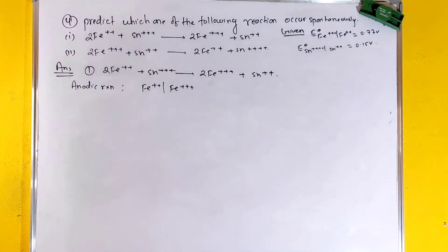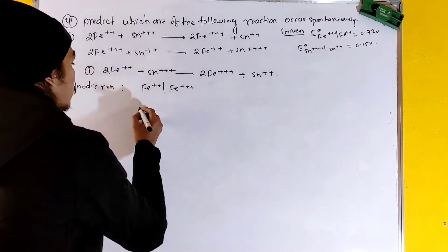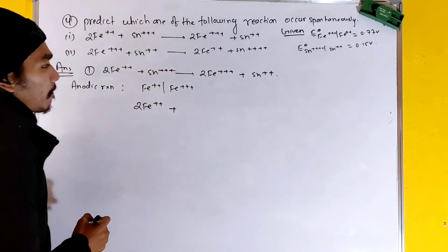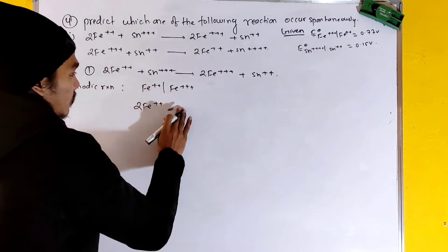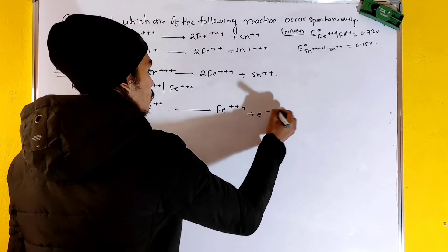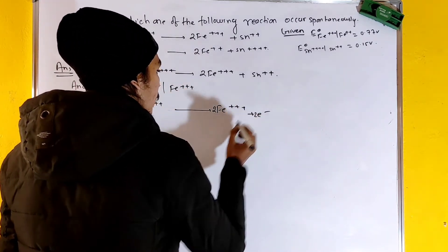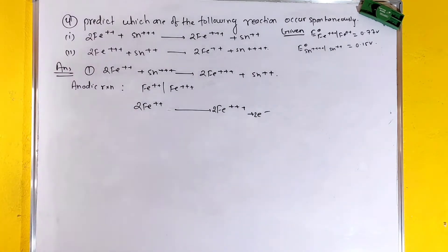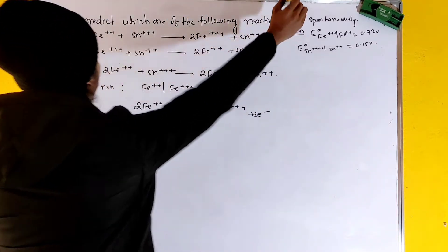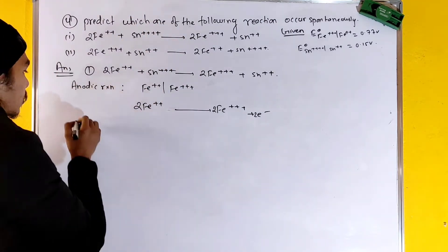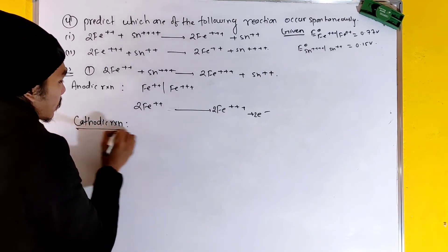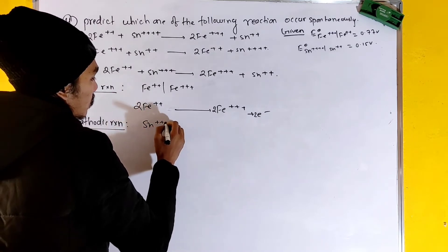The anodic reactions are like this: we have 2Fe²⁺ losing electrons — that means oxidation is occurring. Fe²⁺ loses electrons, forming Fe³⁺. These are the anodic reactions. Now for the cathodic reactions: the cathodic reaction involves Sn⁴⁺ gaining electrons.